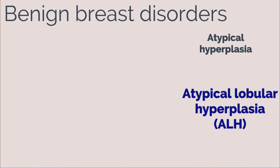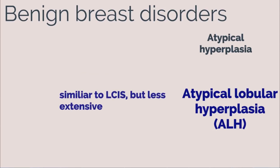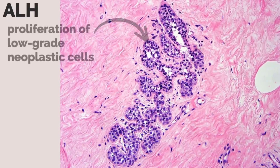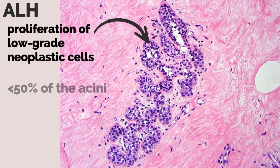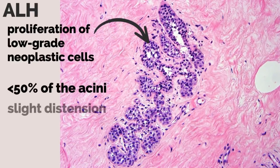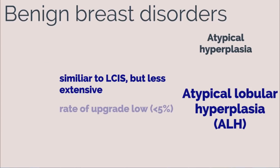Atypical lobular hyperplasia is similar to LCIS but with less extensive disease. Proliferation of low-grade neoplastic cells fill less than 50% of acini in an involved lobule with slight distension. Since the rate of upgrade of pathology is low — less than 5% — treatment can be observation.